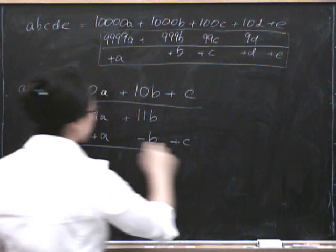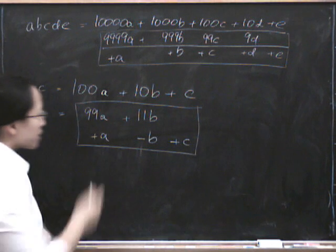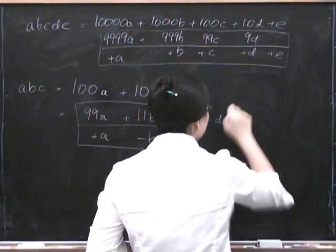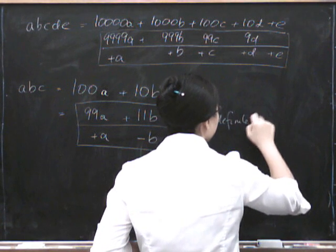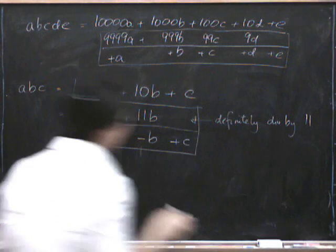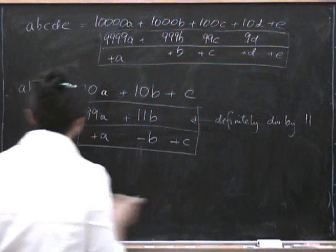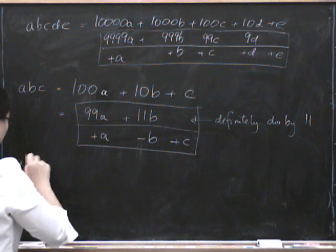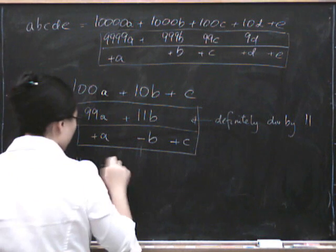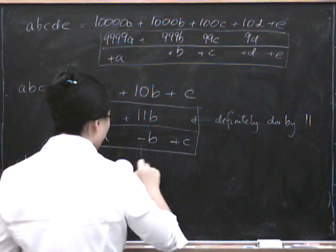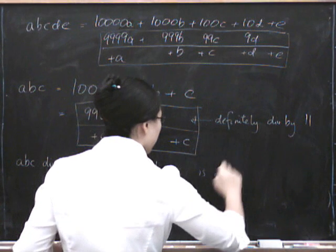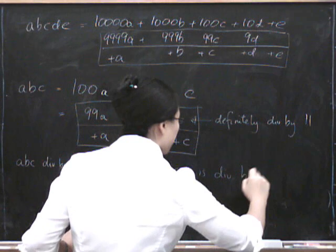So this number is the same as the one we started with. So the top row is definitely divisible by 11. So all we have to do is check the bottom row. So ABC is divisible by 11, precisely if A minus B plus C is divisible by 11.